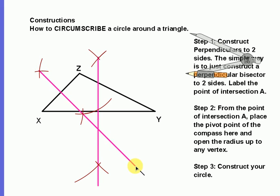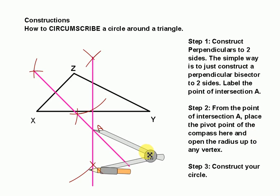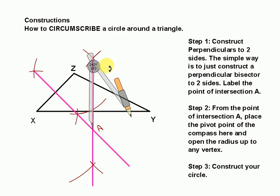And make these nice and long so that you can see the point where they cross right there. So now at that point, I'm going to label this intersection point A. So there is my point A. And now from point A, I'm going to place my pivot point of the compass, and then I will extend this out to any one of these three vertices. It doesn't matter which one.